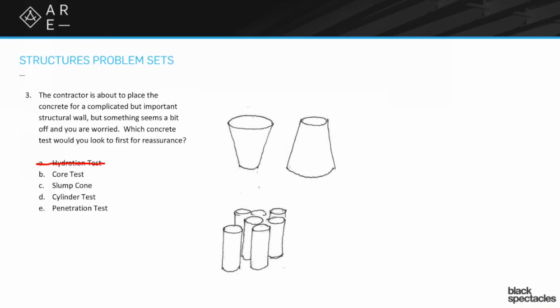The core test and cylinder test are things that you would do down the road. Like the core test would be something you'd do on an existing structure to figure out what your strength of concrete might be. Either there was something that was going wrong and you wanted to test it out, or maybe it's an existing building and you're trying to see can you add more load to it. So the core test is a real thing, but it's just not something you would do in the way that the question was described. And the penetration test is sort of a similar thing. So really the two that are the main ones that you're likely to be asked about would be the slump cone test and the cylinder test.